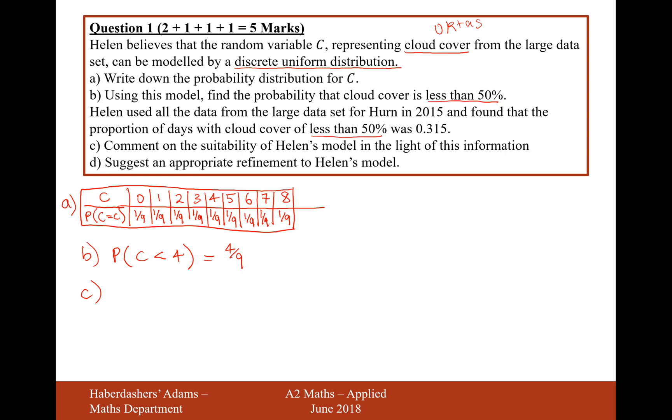Now, moving on to C, Helen used all the data from the large data set for HERN in 2015, and found that the portion of days with cloud cover with less than 50% was 0.315.